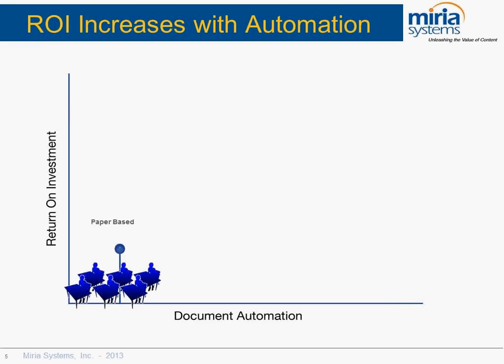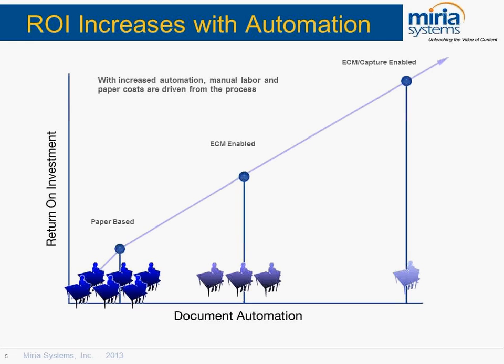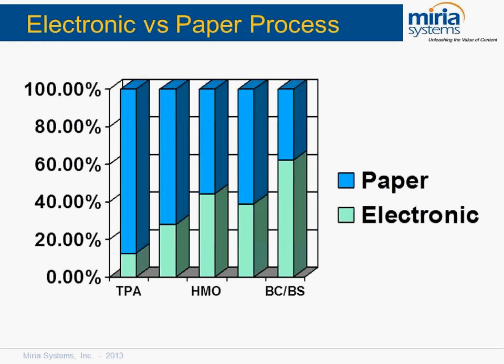You can see that the paper-based process is not very efficient. When you introduce organization using ECM, you start to increase your efficiency, but until you add data capture to the front end, you can't really realize your full potential with ROI. Most companies may think they have this covered, but even large payers can benefit from more automation. Third-party administrators are down around 10%, and even Blue Cross Blue Shield isn't at 100%, so there's still room for improvement for everybody.